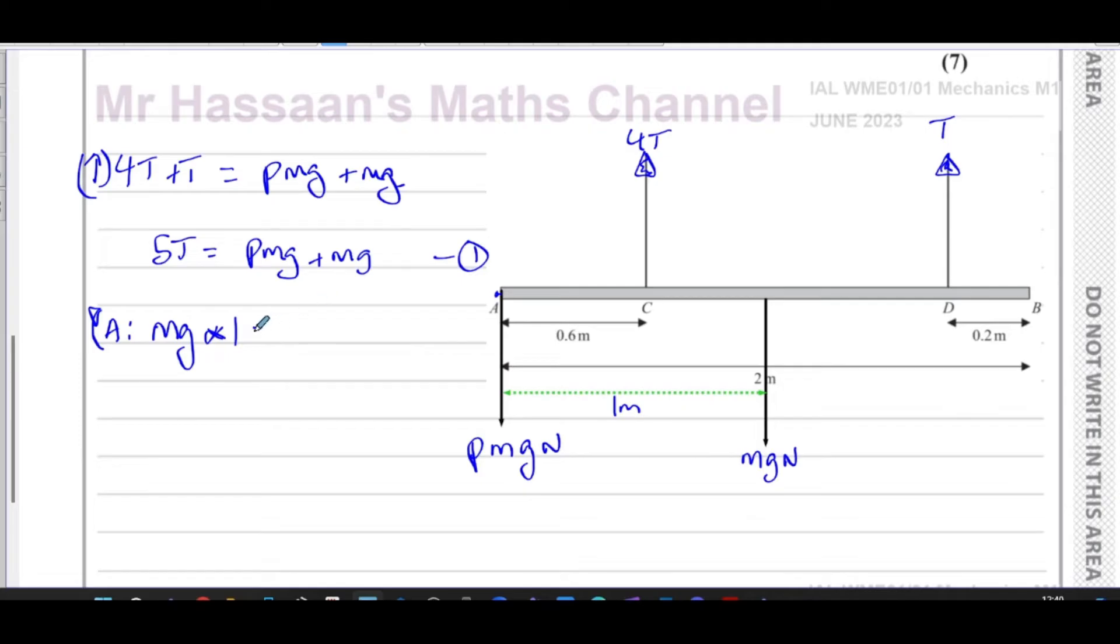These two are anticlockwise moments. So you have equals 4T times 0.6, plus T times this distance here. That distance is going to be basically 2 meters minus 0.2 meters, which is 1.8 meters. So it's going to be T times 1.8.